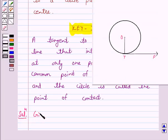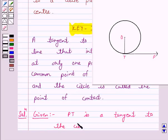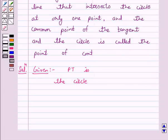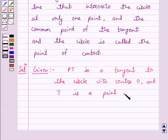Given: PT is a tangent to the circle with center O, and T is a point of contact.